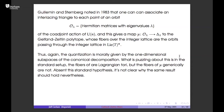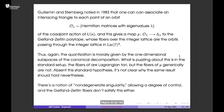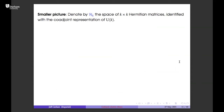Not all fibers are Lagrangian tori in this case — it's an edge case between known well-behaved realms and something different, which is one reason it's received interest from symplectic geometers. There are non-degenerate singularities where there's still something you can say, and the Gelfand-Zetlin fibers don't quite satisfy that either. So something remains to be explained — I'm not the person to explain it, but I will talk about the topology of the fibers.